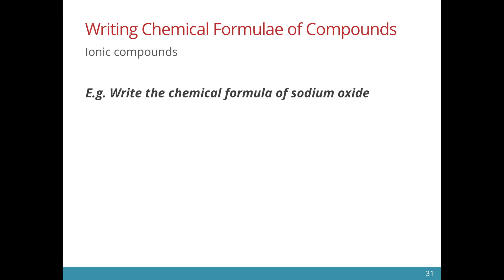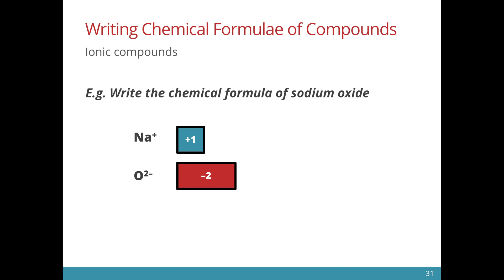Let us look at sodium oxide. Sodium oxide is an ionic compound that is made up of the sodium ion and the oxide ion. The sodium ion has a plus one charge, while the oxide ion has a minus two charge. Again, we will need two sodium ions so that we can balance the minus two charge provided by the oxide ion. The chemical formula of sodium oxide would be Na2O.